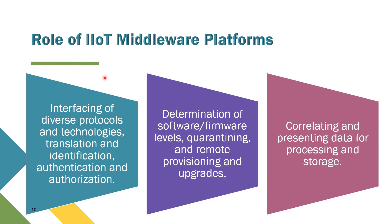Let us look into the role of the IoT middleware platform. There are three main roles. The first one is interfacing of diverse protocols and technologies, translating, identification, authentication, and authorization. The IoT middleware is supposed to be able to integrate all the protocols and technology together, translate and identify the data and also the user using the system, and then authenticate and authorize the usage of the data to the correct user.